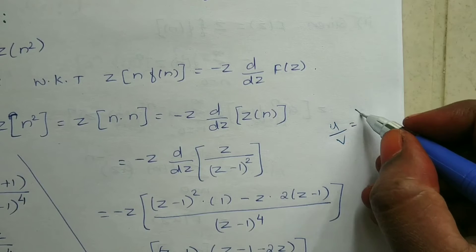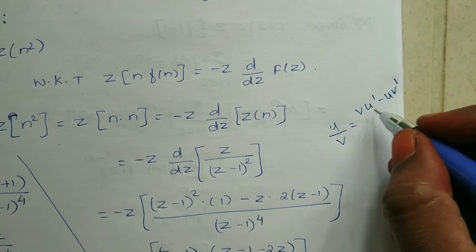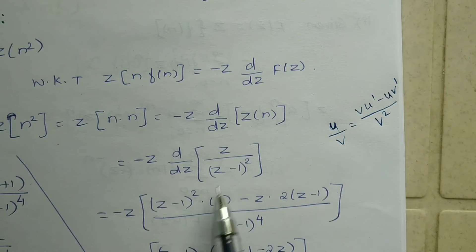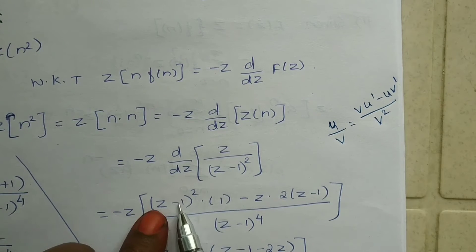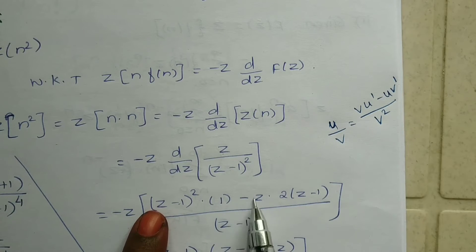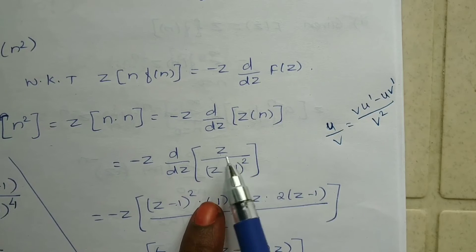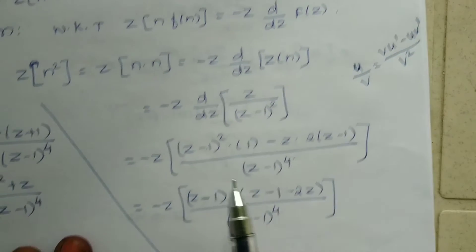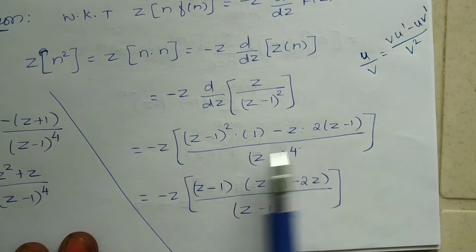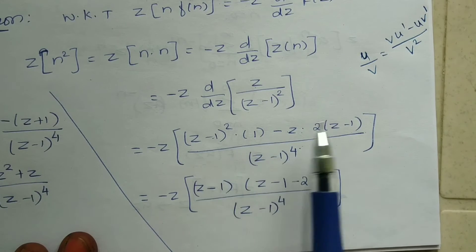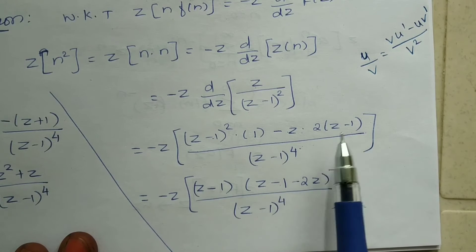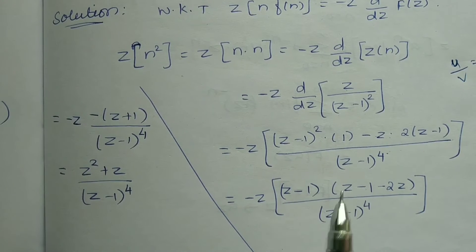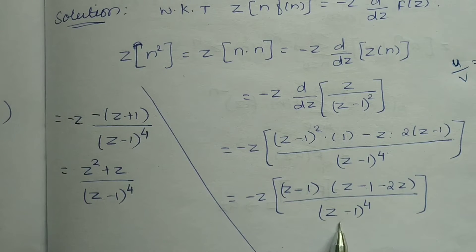We now apply the u by v (quotient rule) method to differentiate. The formula is: d/dz of u/v equals (v times u-dash minus u times v-dash) divided by v-squared. Applying this to Z of n, where F(z) equals z by (z minus 1) squared, we differentiate. The denominator becomes (z minus 1) power 4 after the quotient rule is applied, and then we simplify to combine the result.